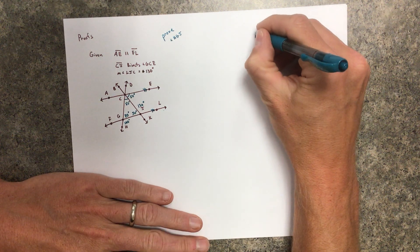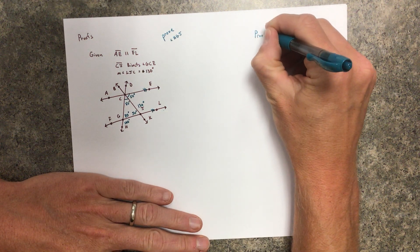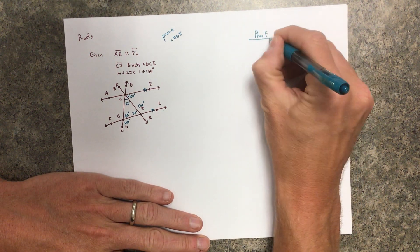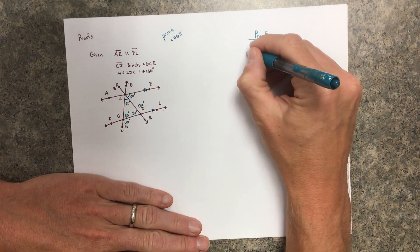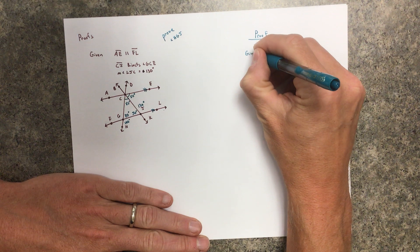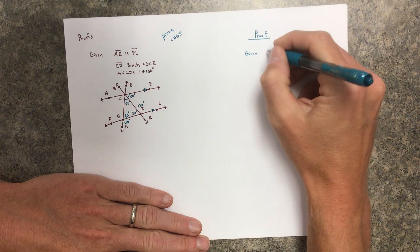So here's our proof. You have to write it out. First thing you have to do is write out the given. You have to rewrite it. I understand it's right there, but you still have to do it.